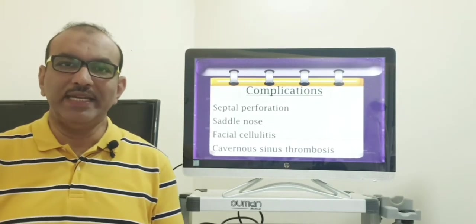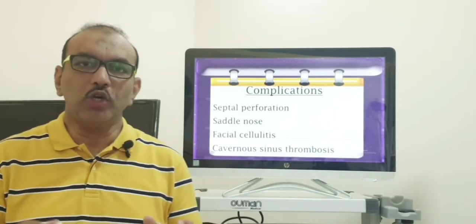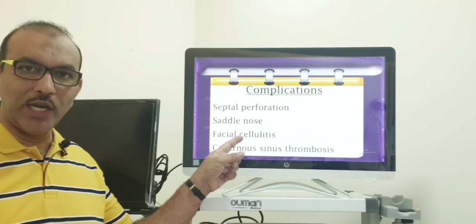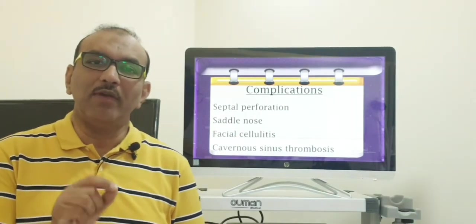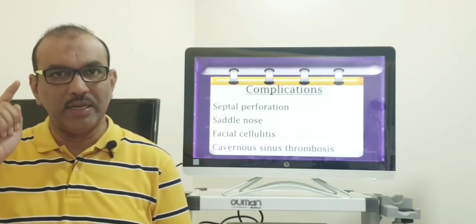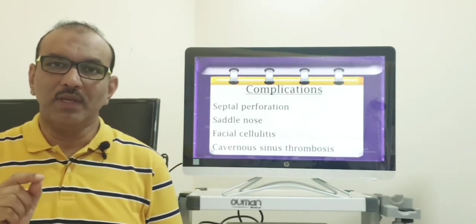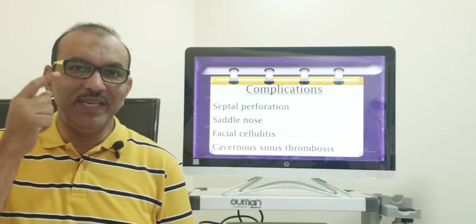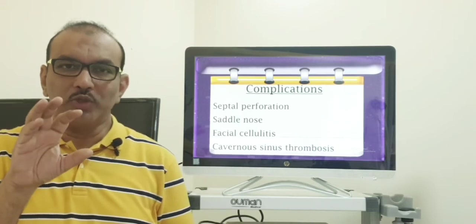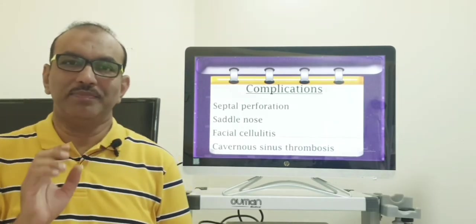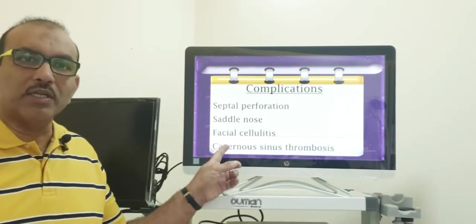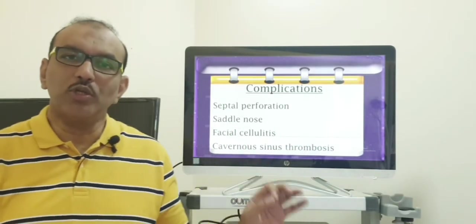Now, I have mentioned that this is an ENT emergency. And I have told you the cause for it. Now, the complications, if you don't manage at the earliest, like how I mentioned, the first two complications, septal perforation, saddle nose, not only that, the patient can develop facial swelling and cellulitis. And this abscess can spread from here to the brain, and it can result in meningitis. Likewise, the abscess can spread from here to a venous system, which is a paired venous system on both sides here. It's called a cavernous system. So it has got so many important nerves related to that. So the infection from here, it can spread to the venous system also, resulting in something called cavernous sinus thrombosis. That is also a dreaded condition.